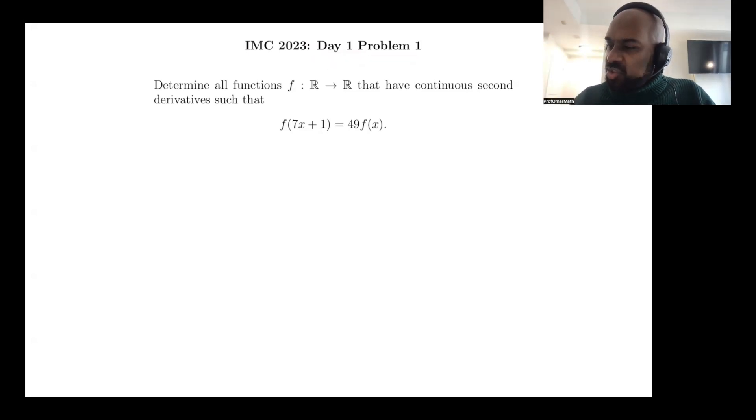So the question asks, determine all functions f, whose domain is the reals, that map into the reals, that have continuous second derivatives, and such that f evaluated at 7x plus 1 equals 49f of x.